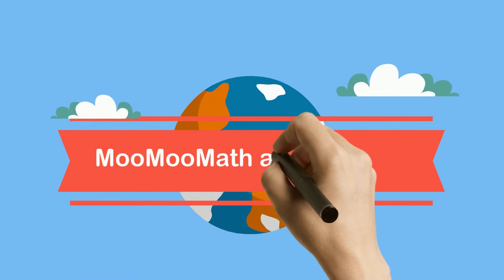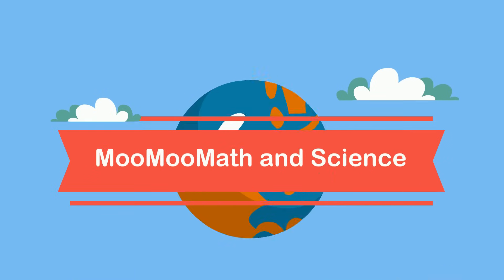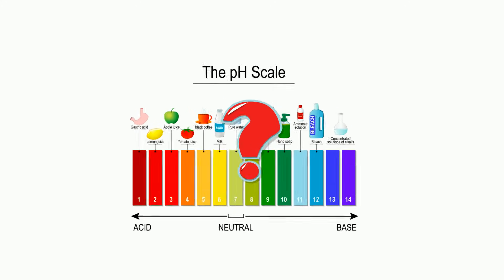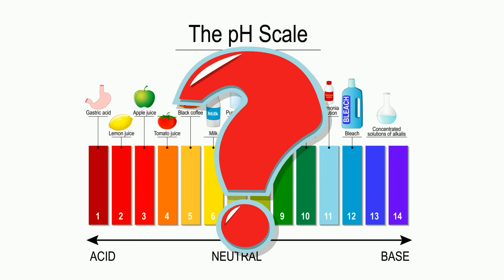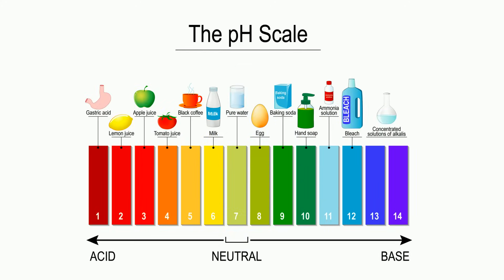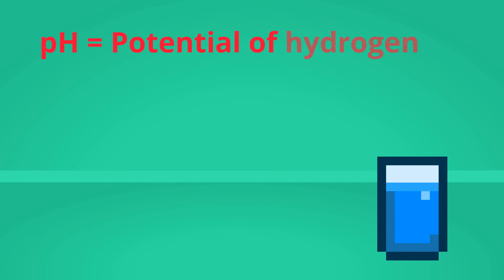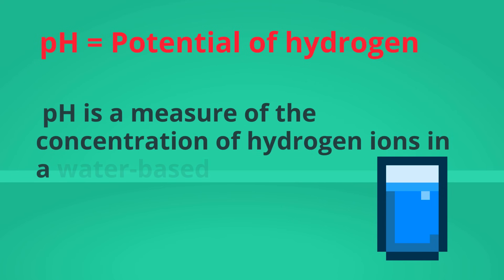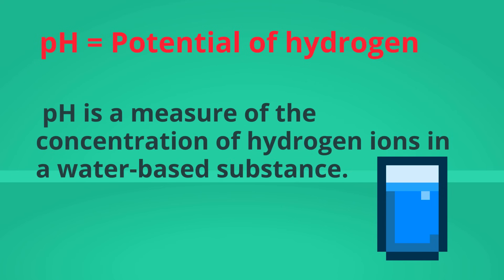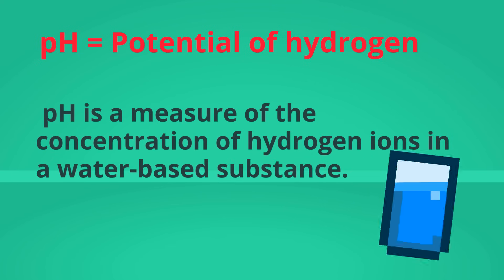Welcome to Moo Moo Math and Science and the pH Scale. What is pH? Let's start with what it stands for. pH stands for the potential of hydrogen, and it's a measure of the concentration of hydrogen ions in a water-based substance.